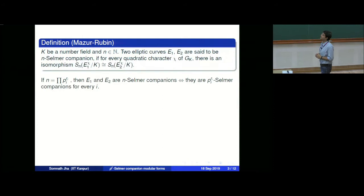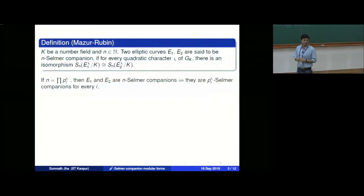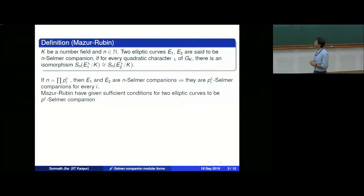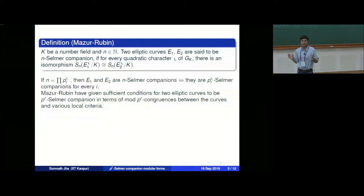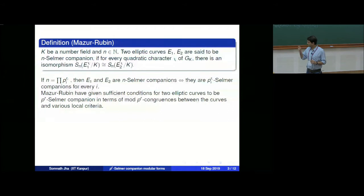It immediately reduces to the study of p^r-Selmer groups for prime powers r, because the n-Selmer group can be decomposed into p^r-Selmer groups. In this paper, they give a sufficient condition for when two elliptic curves are p^r-Selmer companions — in terms of p^r-congruence. If two elliptic curves are congruent mod p^r and some local criteria are satisfied, then they will be p^r-Selmer companions.